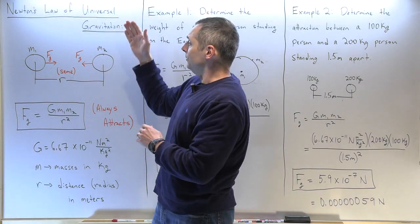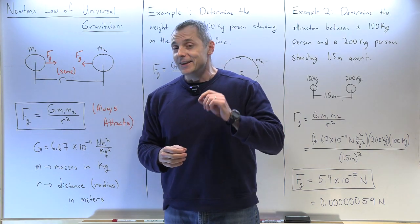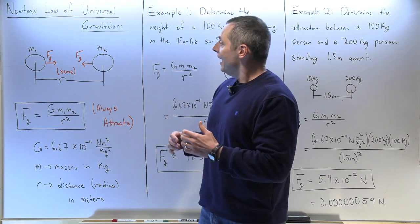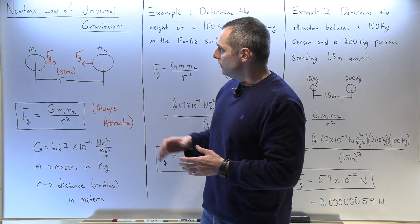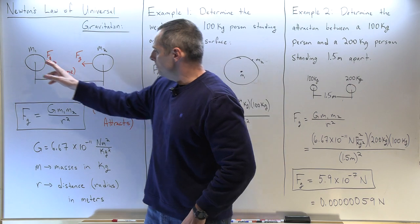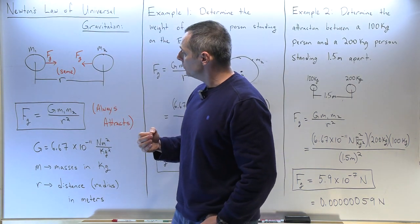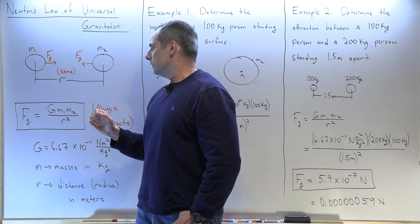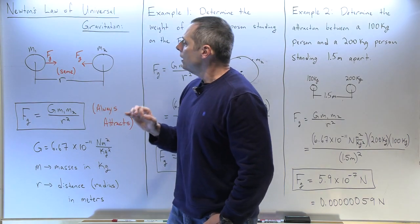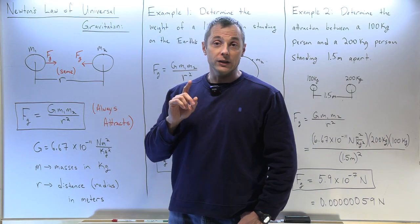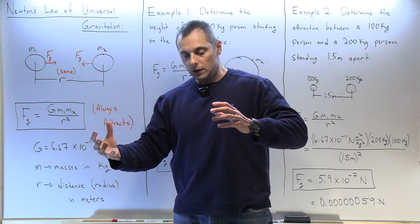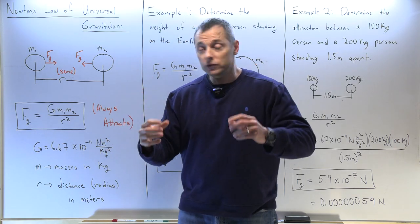That brings us to Newton's Law of Universal Gravitation, thought of by Isaac Newton — so much of physics he thought of, this is just one more thing. If you have two objects, mass 1 and mass 2 a certain number of kilograms, separated by a distance r from center to center, they will attract each other. Gravity always attracts, it never repels. It doesn't matter if you have a planet and a star, or a planet and a satellite — always attraction.